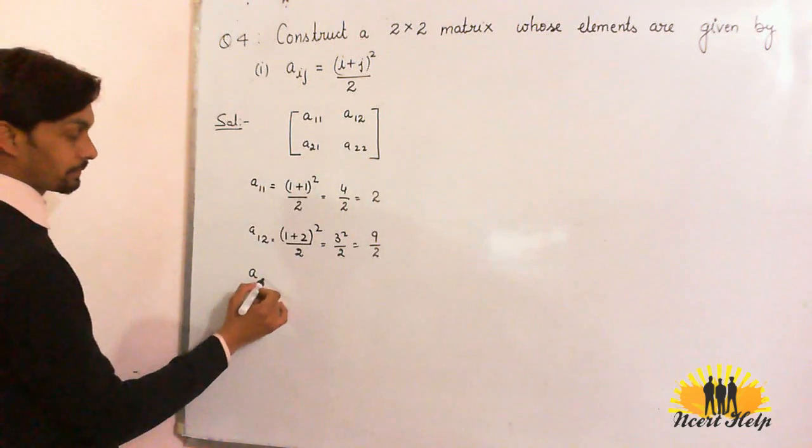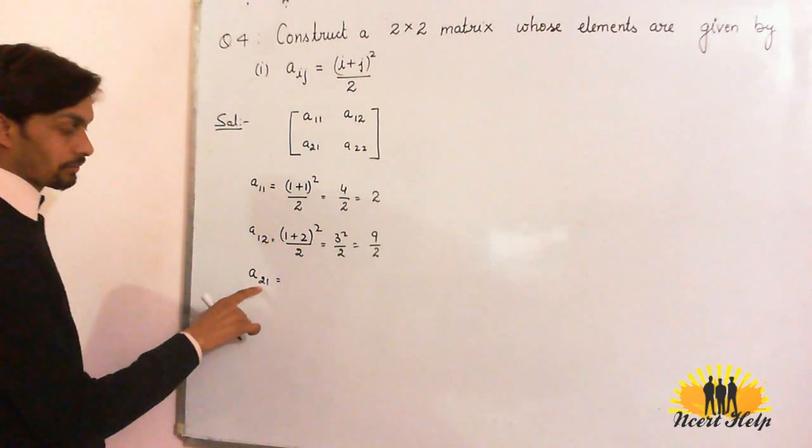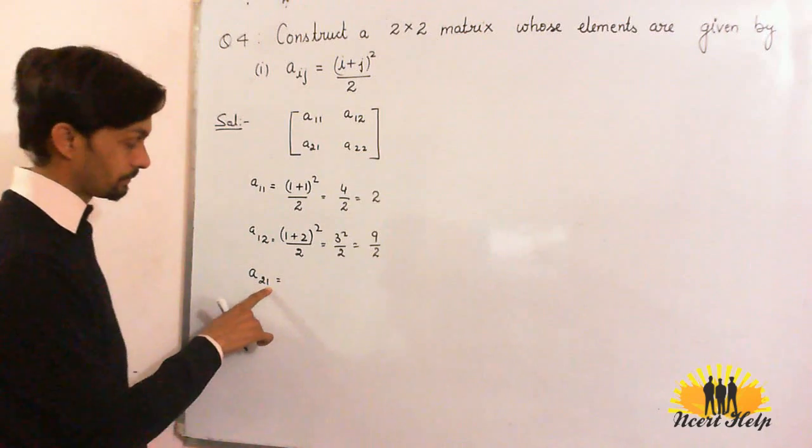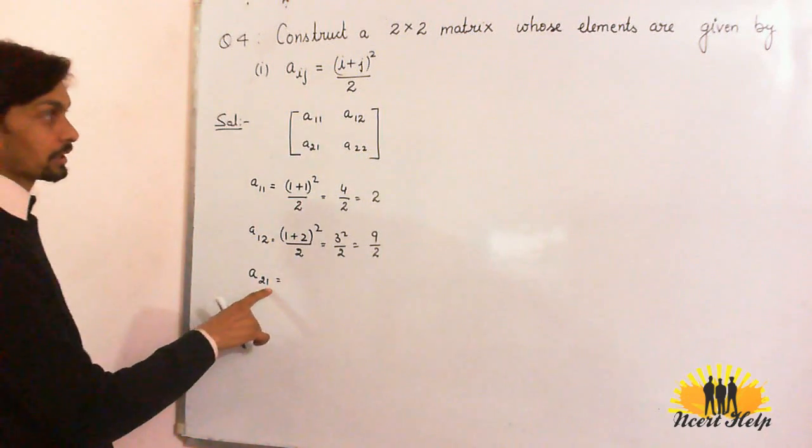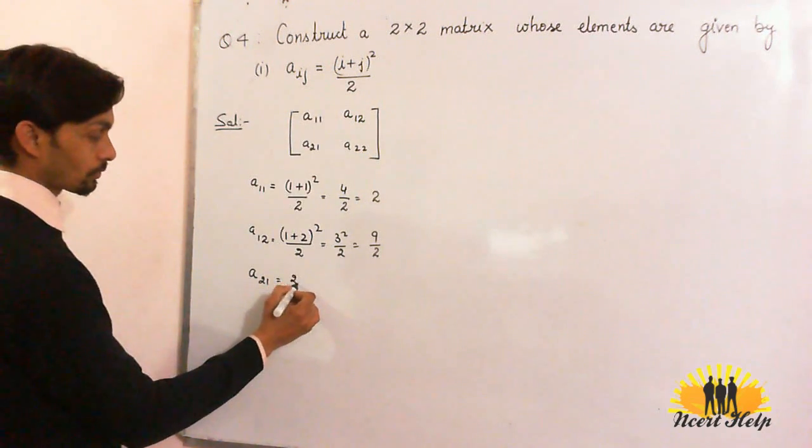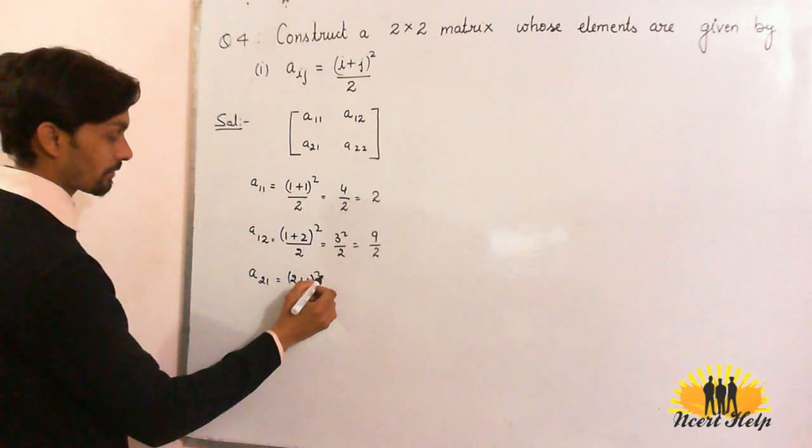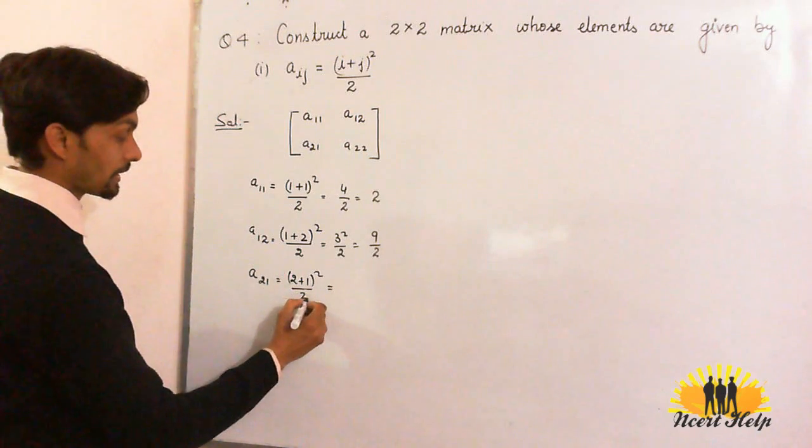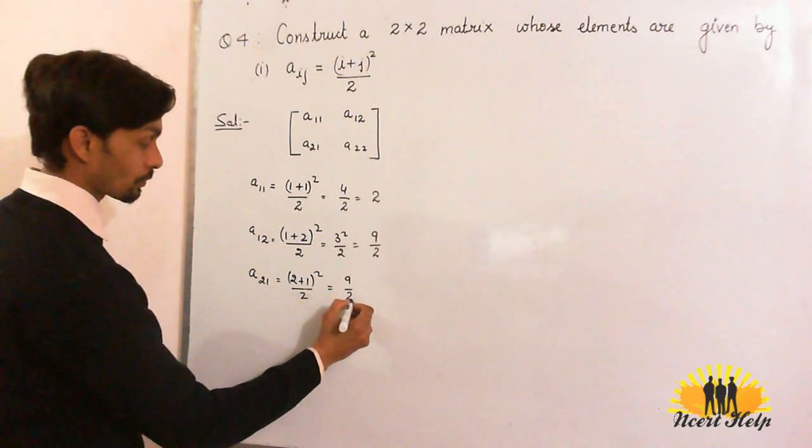Now A21. Here the value of i is 2 and value of j is 1. Put this value in the formula. It will be (2+1)² divided by 2. Again you will get 9/2.